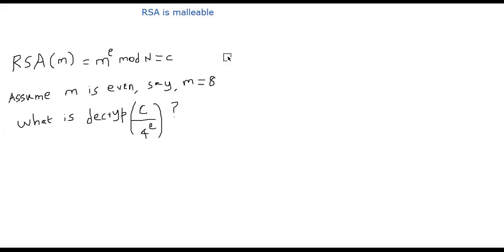Suppose you have an RSA function that we have been talking about. RSA of m is defined by m power e mod n. e and n are public parameters. You get a ciphertext c.